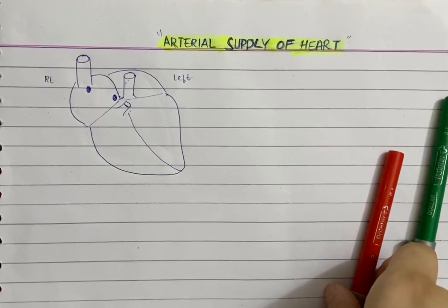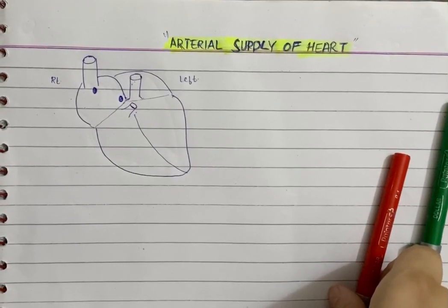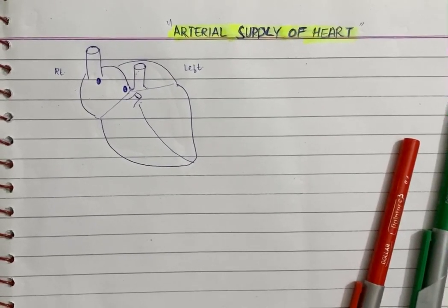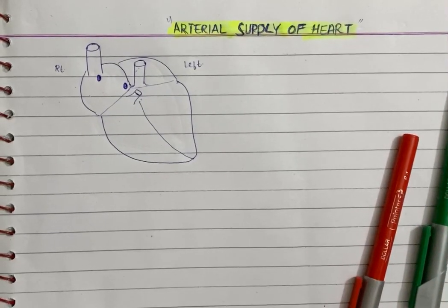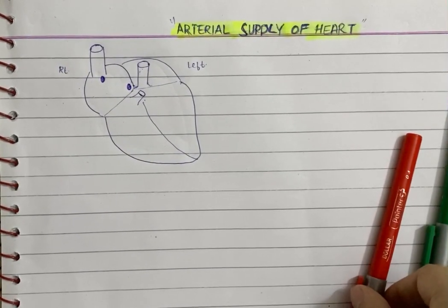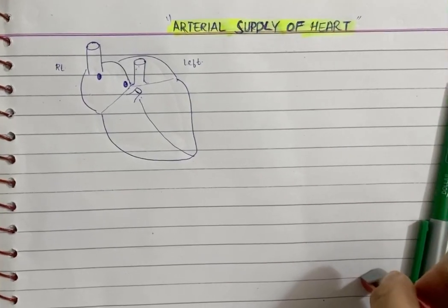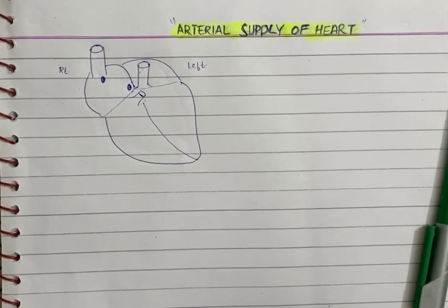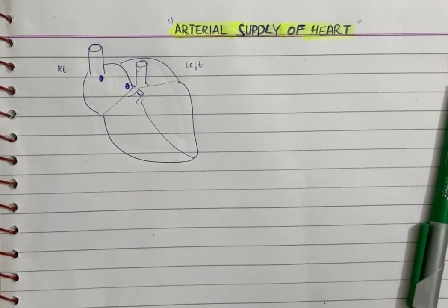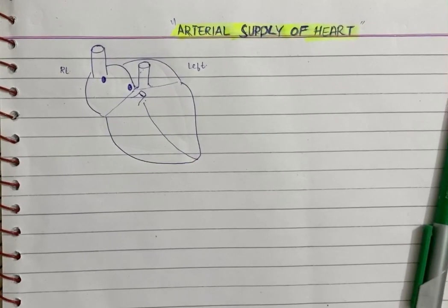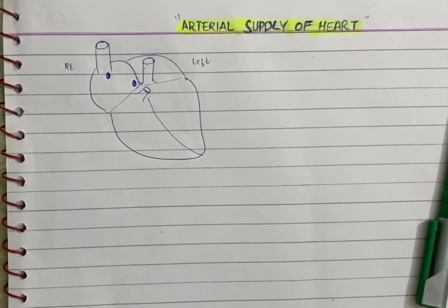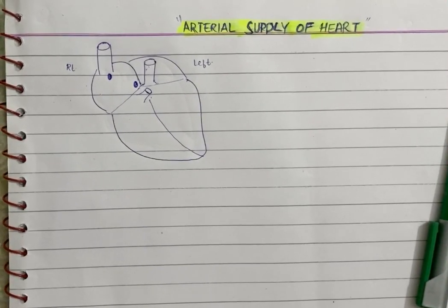Assalamu alaikum, this is Shama Tazara and today my topic of discussion is the arterial supply of the heart. I have chosen this topic because we are really confused about what the branches of the artery that supplies the heart are, and which part is supplied by which branch of the coronary artery. My whole video is divided into two parts: in the first part I will focus on the arterial supply of the heart and all the branches of the arteries, and in the second part I'll discuss which part of the heart is supplied by which branch of the coronary arteries.